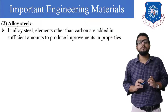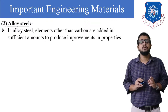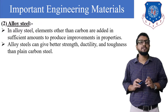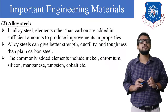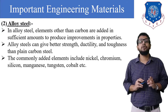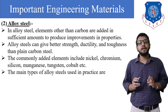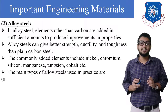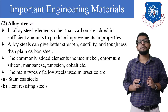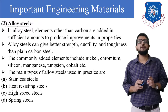In alloy steel, elements other than carbon are added in sufficient amounts to produce improvements in properties. Alloy steel can give better strength, ductility, and toughness than plain carbon steel. Commonly added elements include nickel, chromium, silicon, manganese, tungsten, cobalt, etc. The main types of alloy steel used in practice are: stainless steel, heat-resisting steel, high-speed steel, and spring steel.